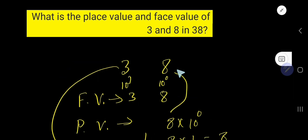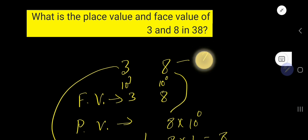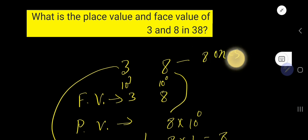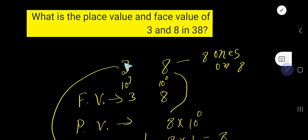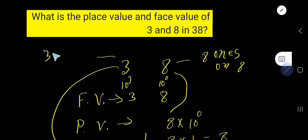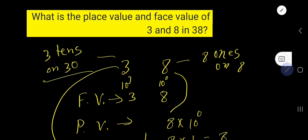So, the place value of 8 is 8 ones, or 8. And the place value of 3 is 3 tens, or 30.